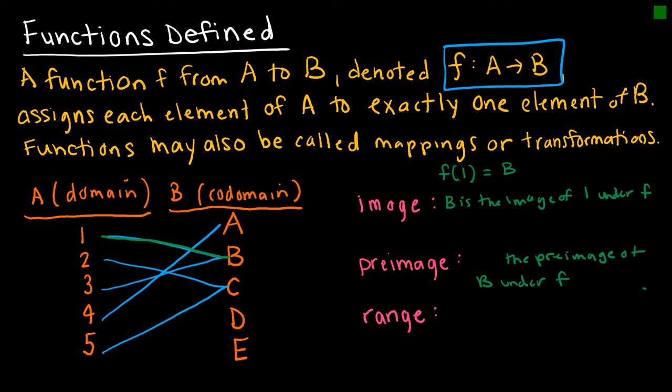But be careful because notice 3 also maps to b. So I would have to say 1 and 3, or the set of 1 and 3, more specifically, the set 1, 3.